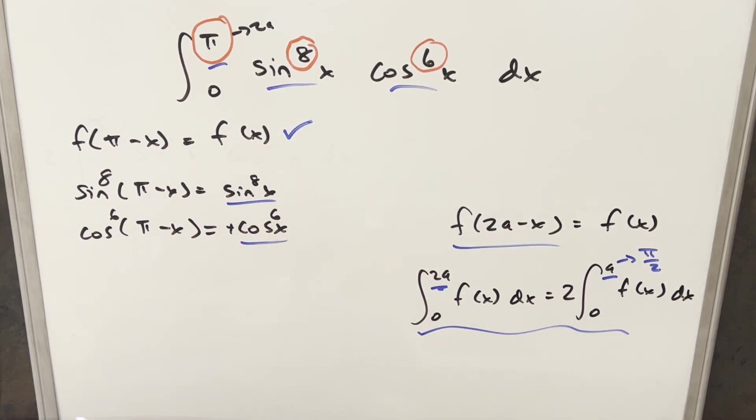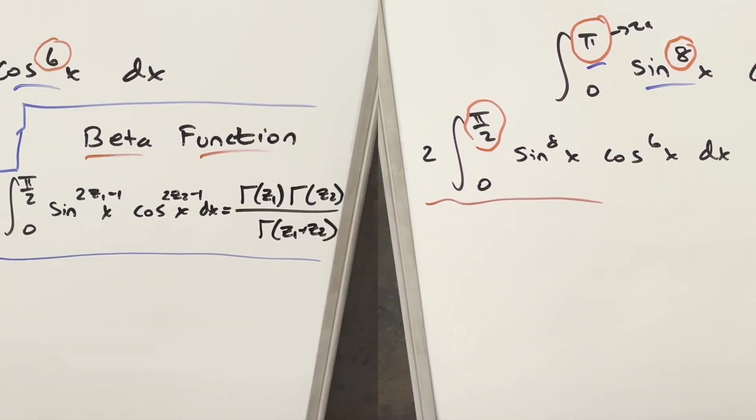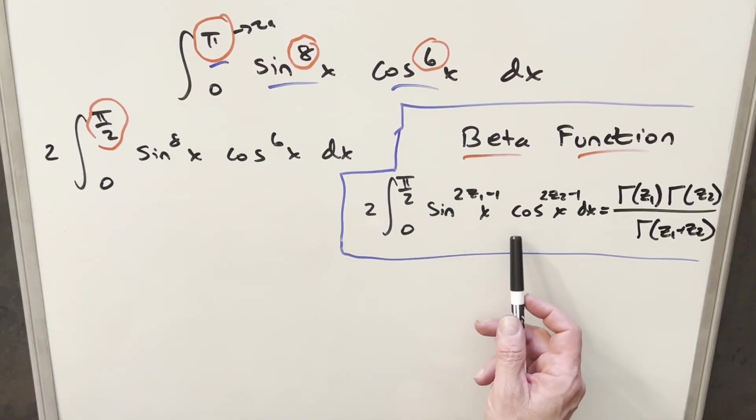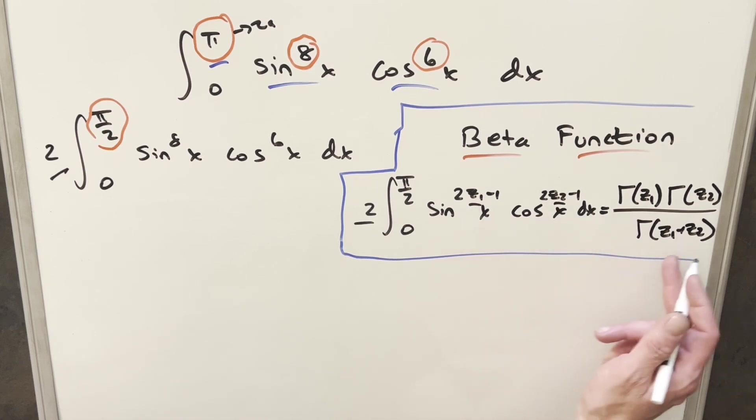So we can use this property. Now this right here is in exactly the right form to use the beta function. We have our formula for the beta function over here to the right. We're in exactly the right form. We've got our bounds, we even have the 2 out front. And we just have the exponents on sine and cosine. We just need to find this z1 and z2 value in order to express this in terms of the gamma function.